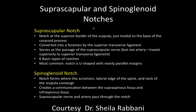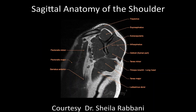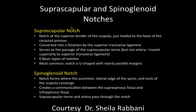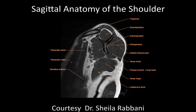Another complication are cysts in the suprascapular and spinal glenoid notch. The innervation to the supraspinatus and infraspinatus muscles comes from the suprascapular nerve, which comes up posteriorly. Either in the suprascapular notch or farther down in the spinal glenoid notch, you can compress that nerve if you have masses.